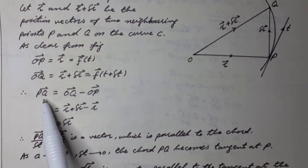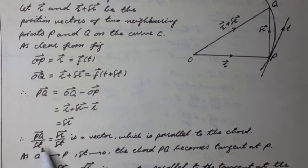Therefore, PQ vector over delta t equal to delta R vector over delta t is a vector which is parallel to the chord PQ.